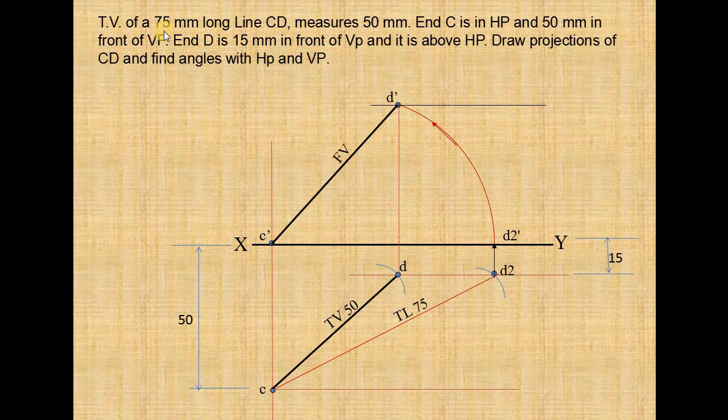Now similarly you take 75 as radius, C dash as center, cut this locus line and name it as d1 dash. Now join C dash and d1 dash. This is our required true length.